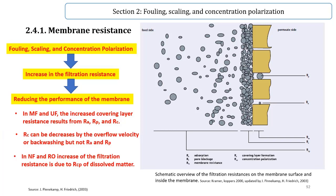On the other hand, covering layer formation can be decreased by increasing the overflow velocity or backwashing the membrane with permeated intervals.